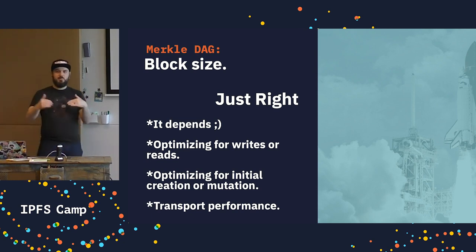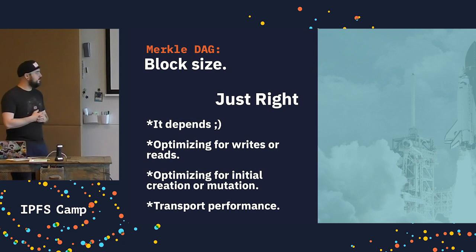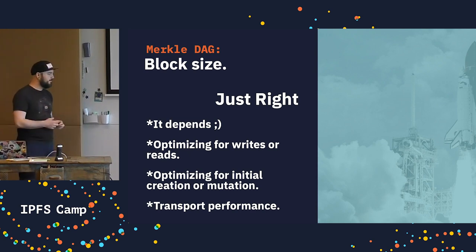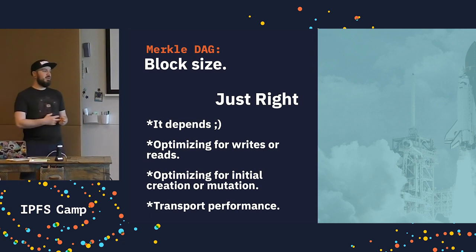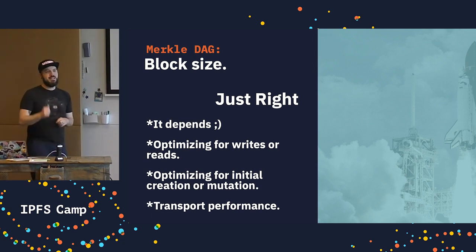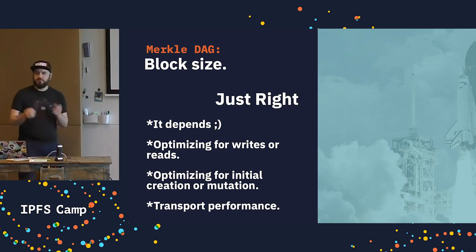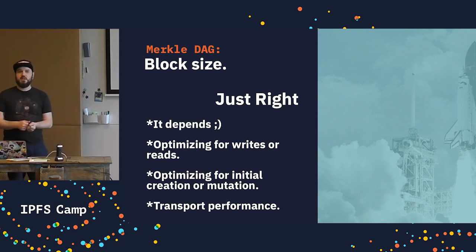HAMT is a good example of something you mutate in place really often, so there's an algorithm in HAMT that guarantees a certain balance and fixed depth of how big the tree will get. These are just different trade-offs you can make when deciding how to create the DAG. You also have transport performance issues — if you're pulling all your blocks out of an HTTP/2 connection to one host, it's going to have a very different performance profile than pulling them out of the peer-to-peer network.